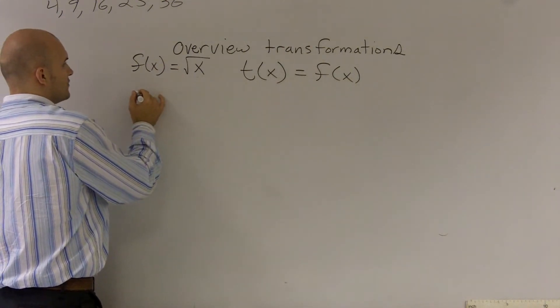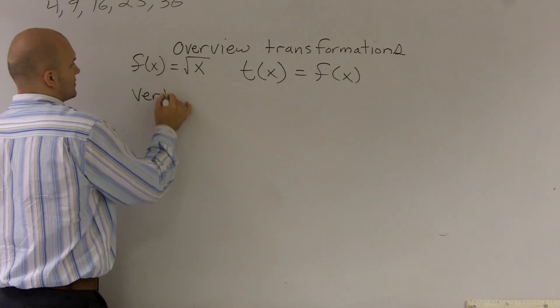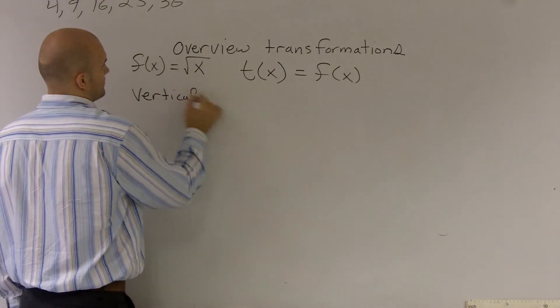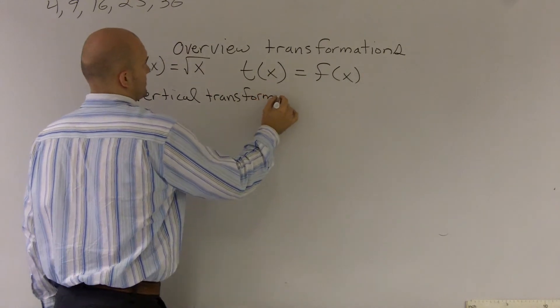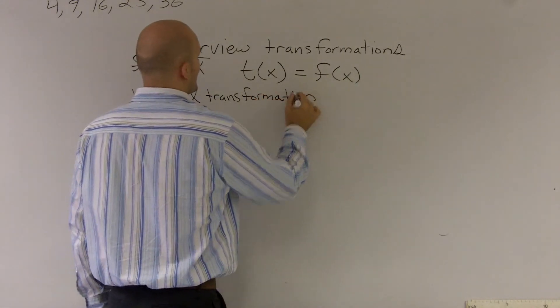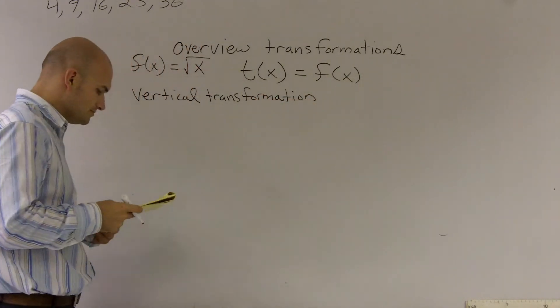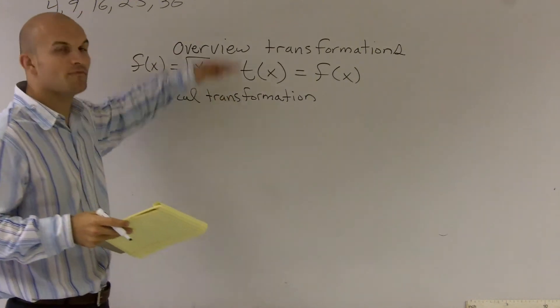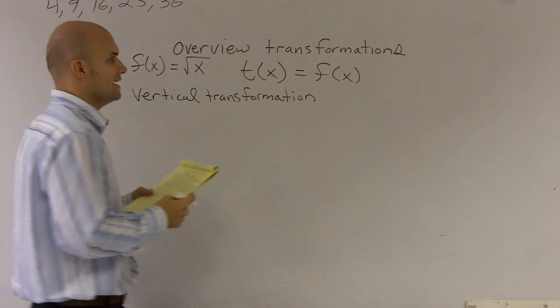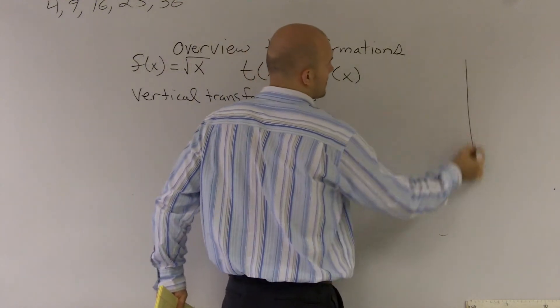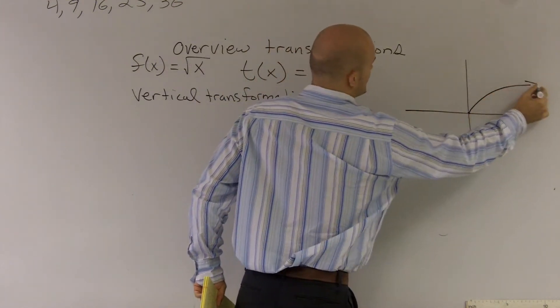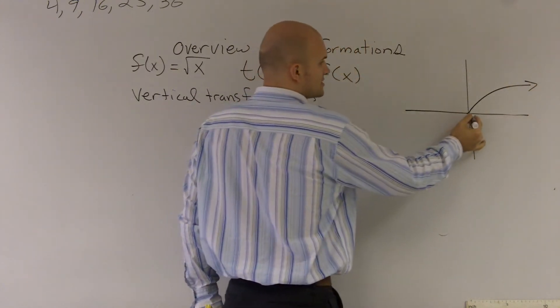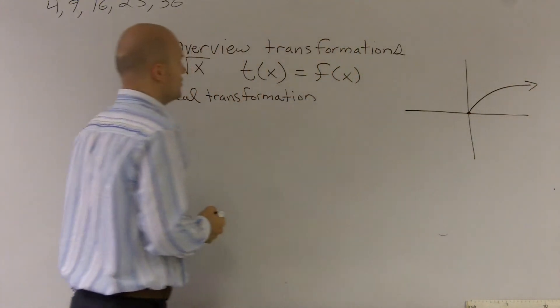The first transformation I'm going to speak about is vertical transformation. Vertical transformations are pretty much when you're going to have a shift upward or downwards of the graph. A little bit of FYI: if we have our original parent graph, the square root function is going to look something like this, it starts at (0,0).